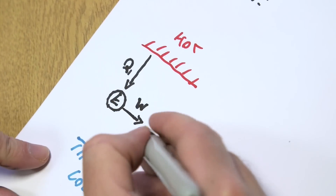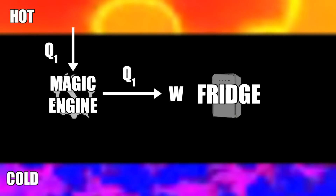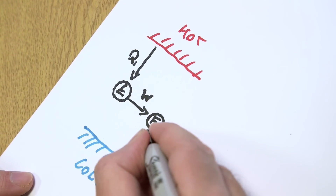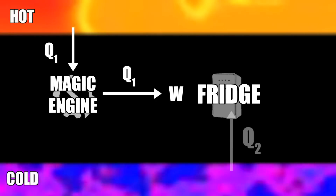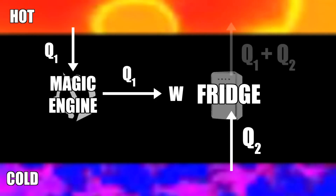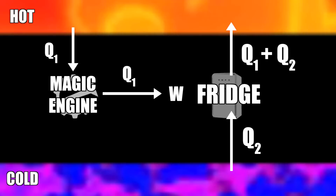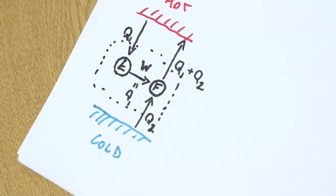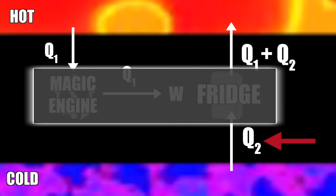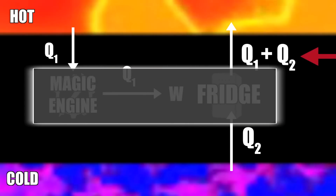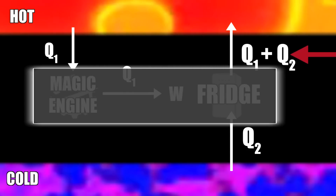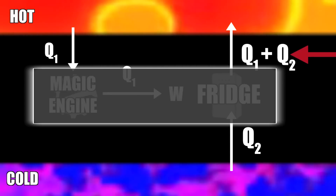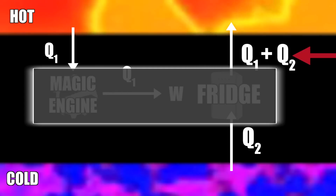The real fridge, powered by that work, sucks energy Q2 out of the cold body. The heat coming out the hot side is Q1 plus Q2. Now if we put a box around all of this, it's sucking Q2 out of the cold body, and the net energy flowing into the hot body is Q2. So effectively we've created a machine where, with no external wires, heat Q2 flows from a cold body to a hot body — and that violates Clausius' version of the second law.